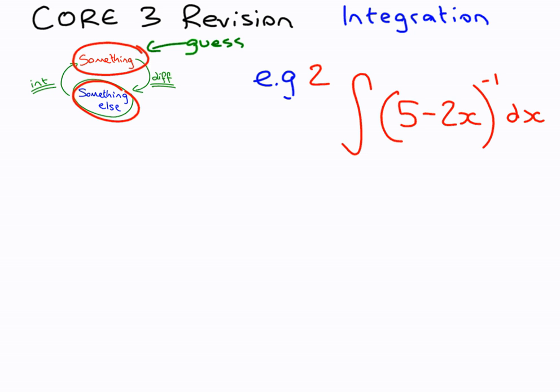Right, so when we're doing this step up at the top, we need to think, what can we differentiate to get to this? Now you need to know that when you differentiate ln of x, that goes to 1 over x. And remember, the power of minus 1 means 1 over it.